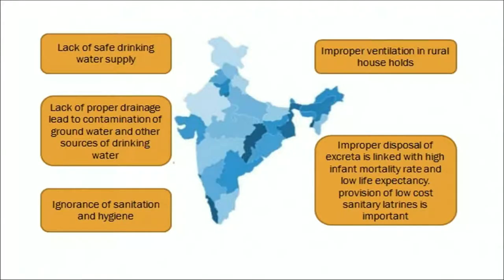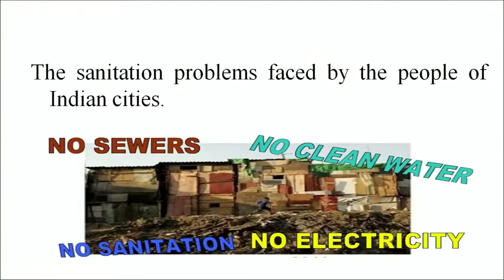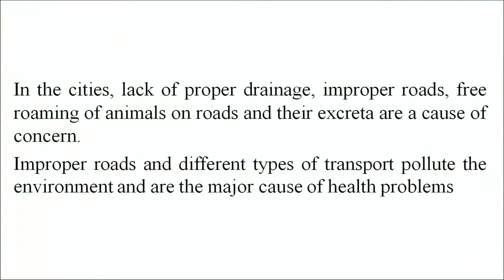Furthermore, women and girls in rural India have limited access to feminine hygiene products. The problems faced by rural people include lack of safe drinking water supply, lack of proper drainage leading to contamination of groundwater and other sources of drinking water, ignorance of sanitation and hygiene, improper ventilation in rural households, and improper disposal of excreta. The sanitation problems faced by people of Indian cities include no sewer, no clean water, no sanitation, no electricity.